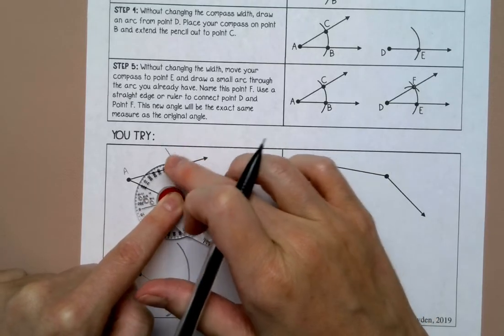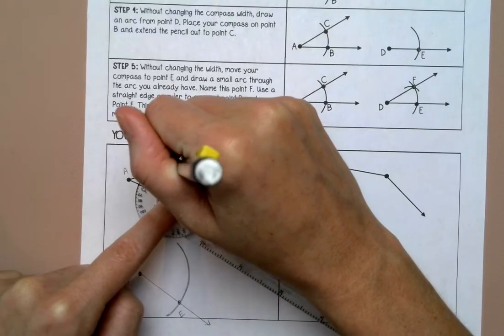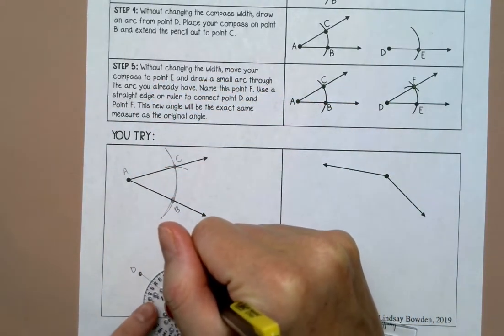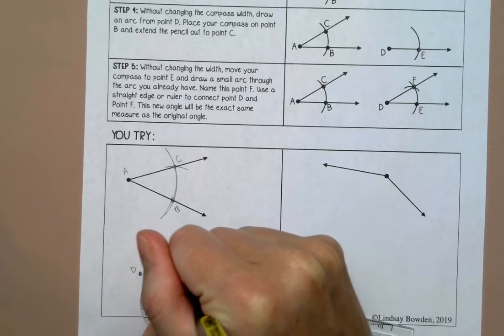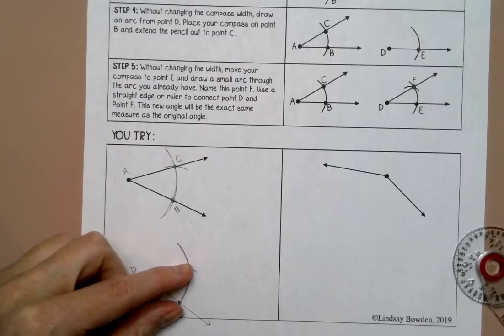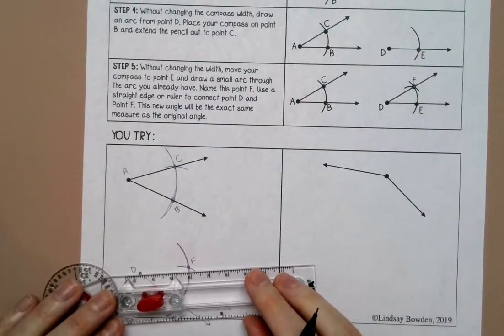I'm going to use this one. I'm going to come down here so that it'll be the same width. I'm going to call this F and then I'm going to draw my new line segment and make it a ray since it's an angle.